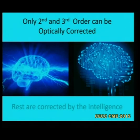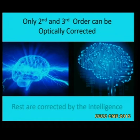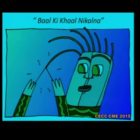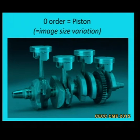Only second and third order aberrations can be optically corrected. All aberrations above the fourth order are corrected either by human neuroadaptation or by artificial intelligence in space digital photography. We'll restrict our talk to aberrations up to order four.